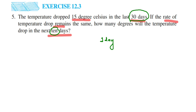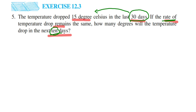So for 30 days, the temperature drop is 15 degrees Celsius. How do we find it for 10 days? We first find out for one day — how much temperature is dropping each day. The same rate means the same temperature drops every day. It's a bit confusing to know which number to multiply and which to divide, so let me clarify.